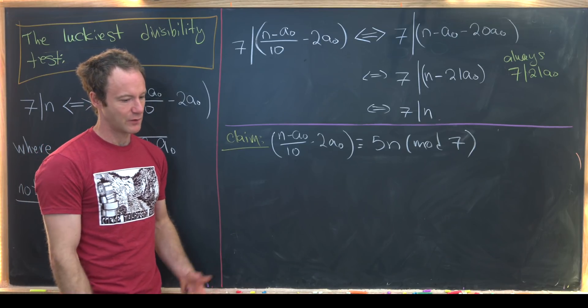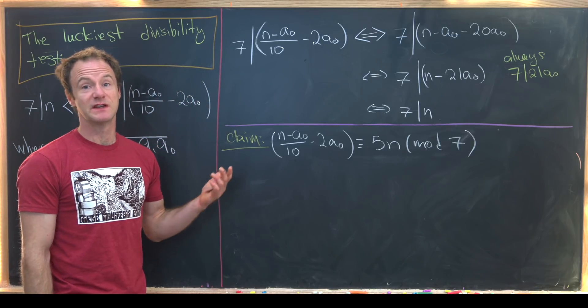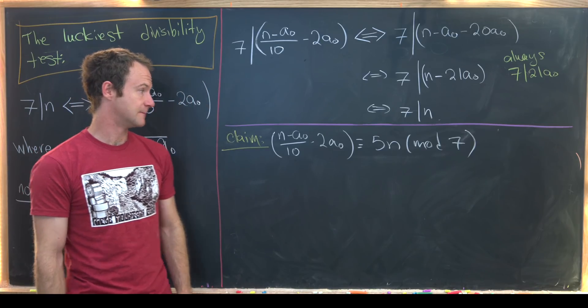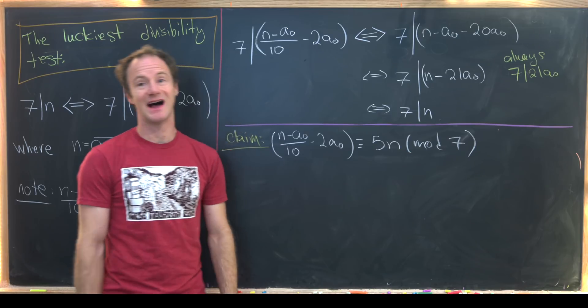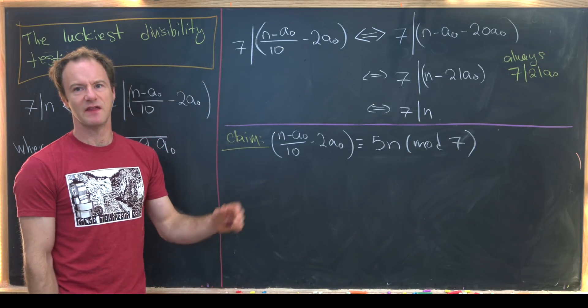That could be problematic if we were trying to compute n mod 7 but for divisibility we're okay because notice if n is 0 mod 7 then 5n is 0 mod 7 and that makes this thing 0 mod 7 and then vice versa.